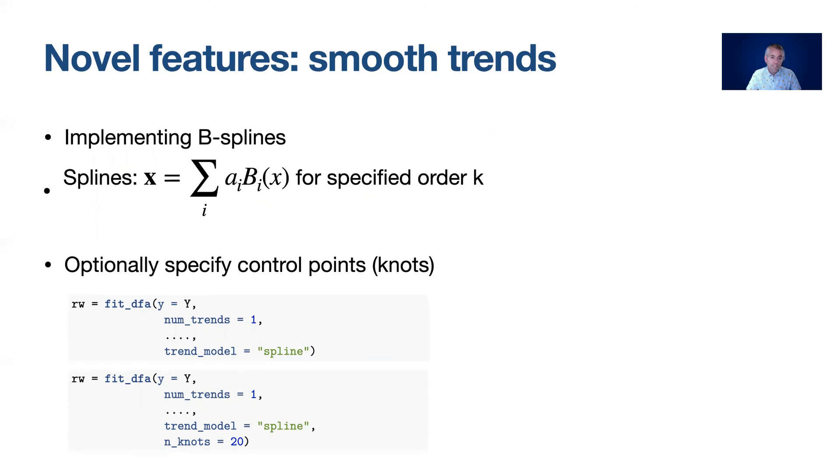In the bayesDFA package we can specify that the trend model is estimated with B-splines by setting the trend_model argument to spline and we can optionally specify the number of control points or knots. More knots will result in a function that's more smooth and wiggly compared to a model that has fewer.